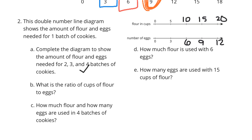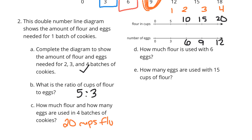What is the ratio of cups of flour to eggs? Flour is 5 to 3. Then, how much flour and how many eggs are used in 4 batches of cookies? Here's 1 batch, 2 batch, 3 batch, 4 batches. So 4 batches — flour and eggs — it's going to be 20 cups of flour to 12 eggs.